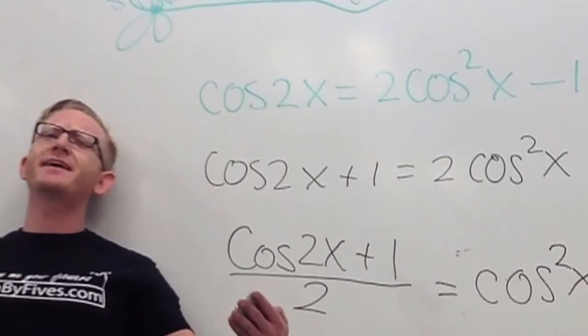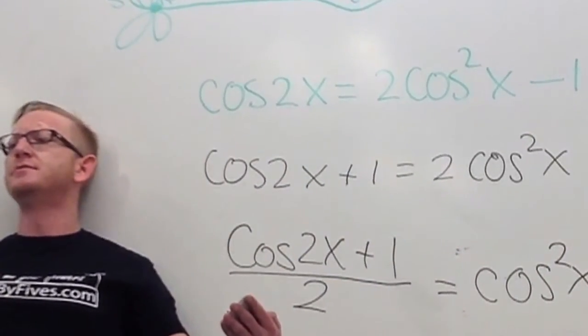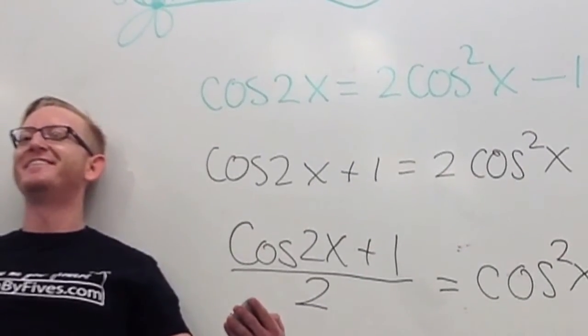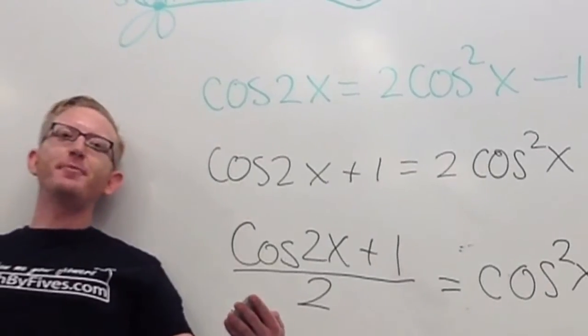What's next? How do I get rid of that cosine? I mean, how do I get rid of that square? I'm going to take the square root of both sides,